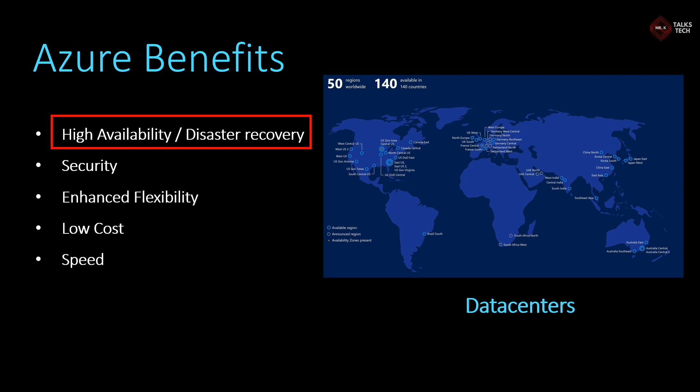Microsoft has data centers in different regions around the world. Think of a data center like a collection of servers with massive storage. All the regions you're seeing on the map have Azure data centers where users could use the storage. For example, consider you have created your storage in the Australia East region and enabled the backup policy provided by Azure. Then even if there are any natural disasters happening in the Australia region and all of your storage has been lost, Microsoft can back up all your data — say for example from the India West region — and you can regain access to all your data in minutes. This is extremely useful and Azure offers this, which is a great benefit.